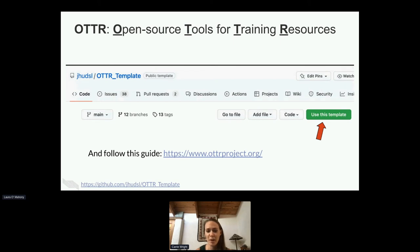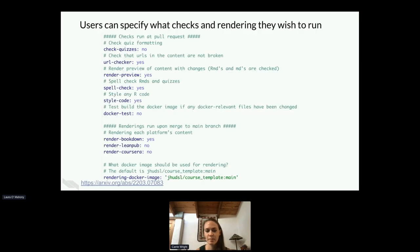You don't need to know about the backend information unless you're interested in it. To actually use our resources, you would just go to our repository for the template and click the 'Use this template' button and follow the guide at our otterproject.org website. There's a YAML file for configuring what checks one might want to run, and users can simply specify no or yes, and can specify what publishing platforms they'd like to use, as well as what Docker image they'd like to use if they'd like to use their own.